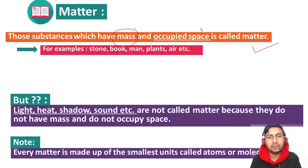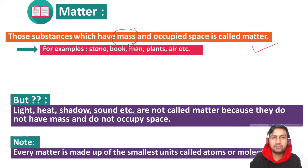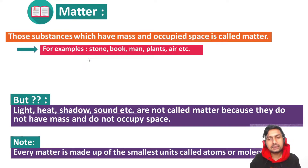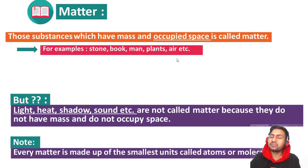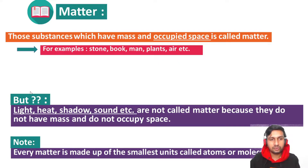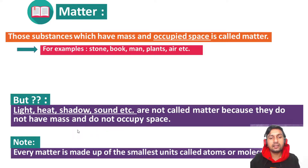So they are examples of matter from daily life — for example: stone, book, man, plants, air, etc. Air is an invisible matter. Light, heat, shadow, and sound are not called matter because they do not have mass and they do not occupy space.